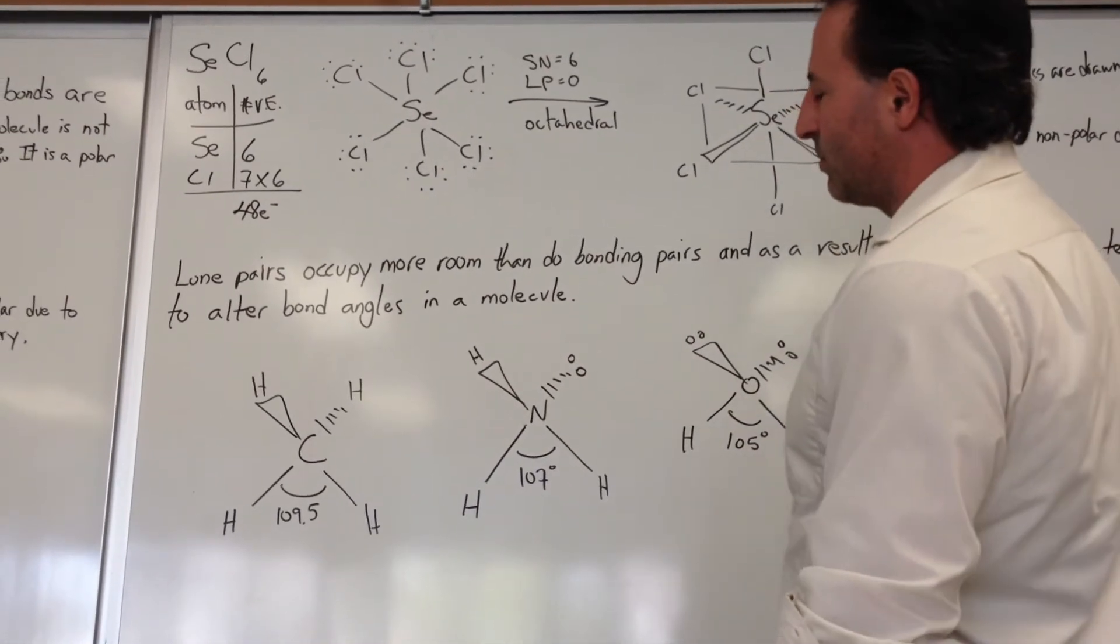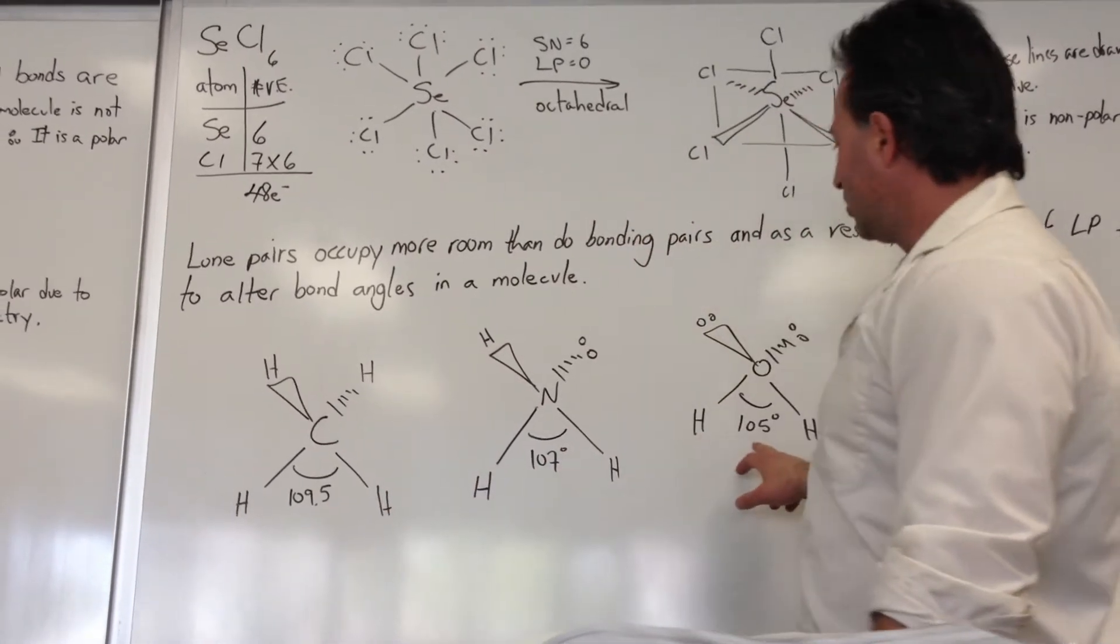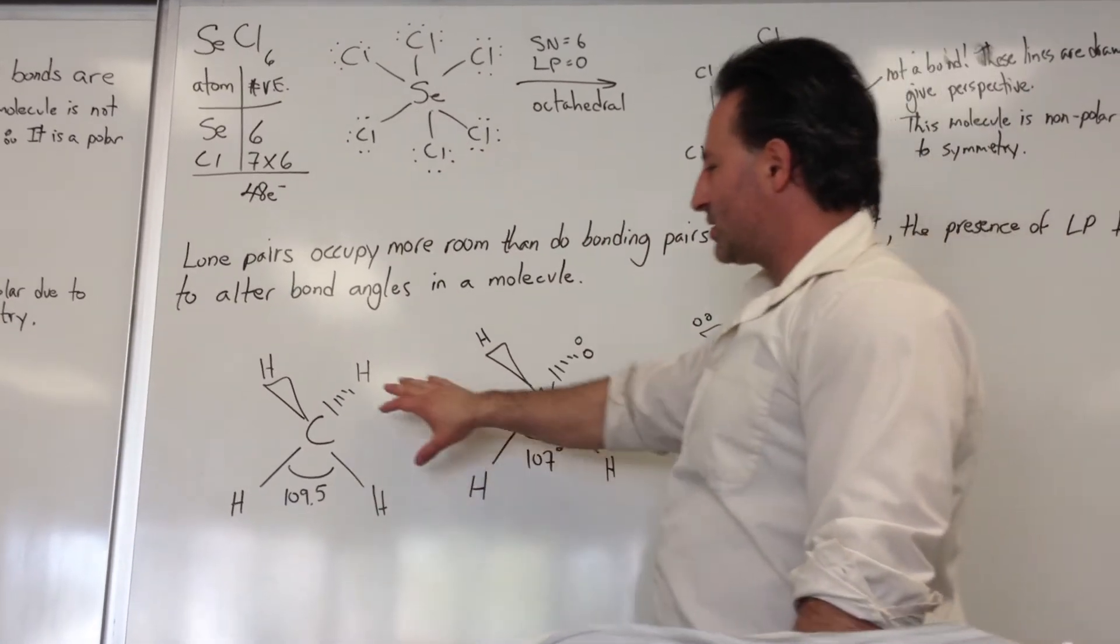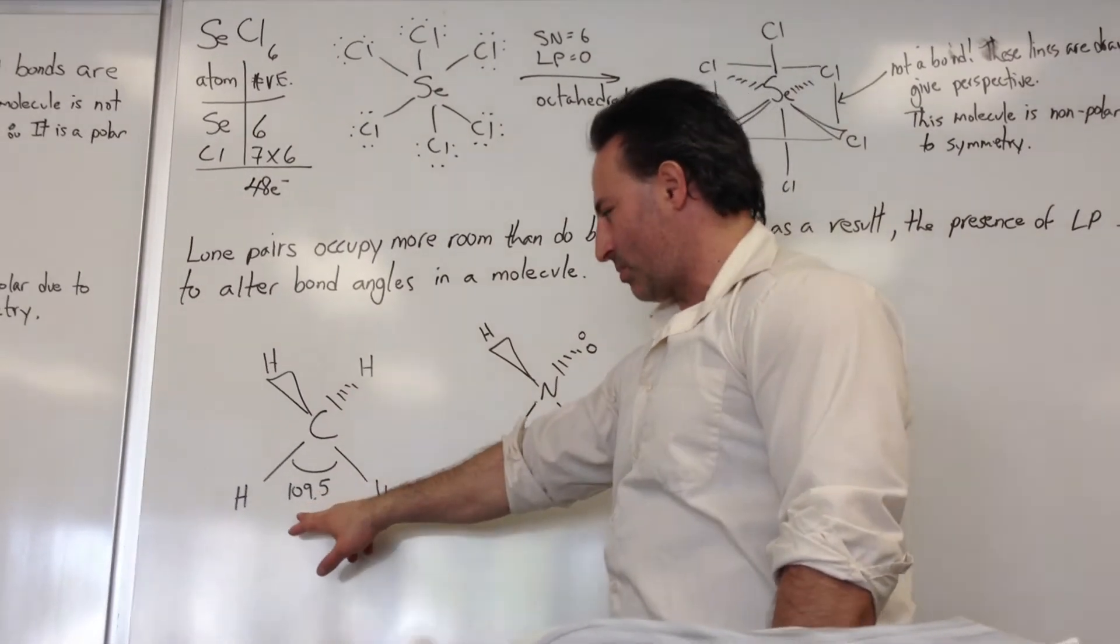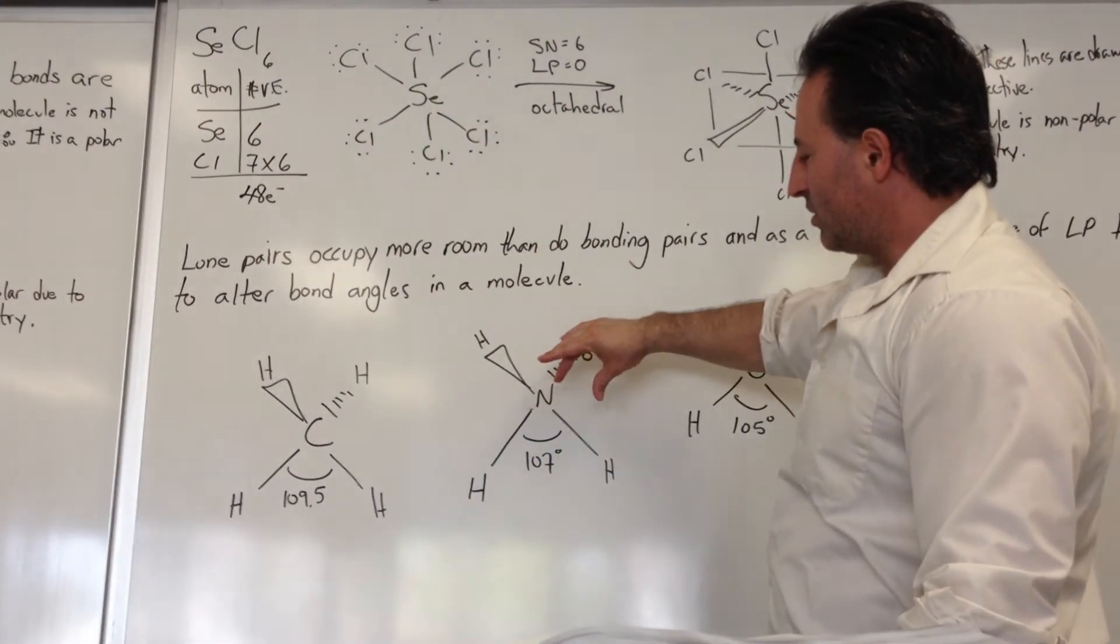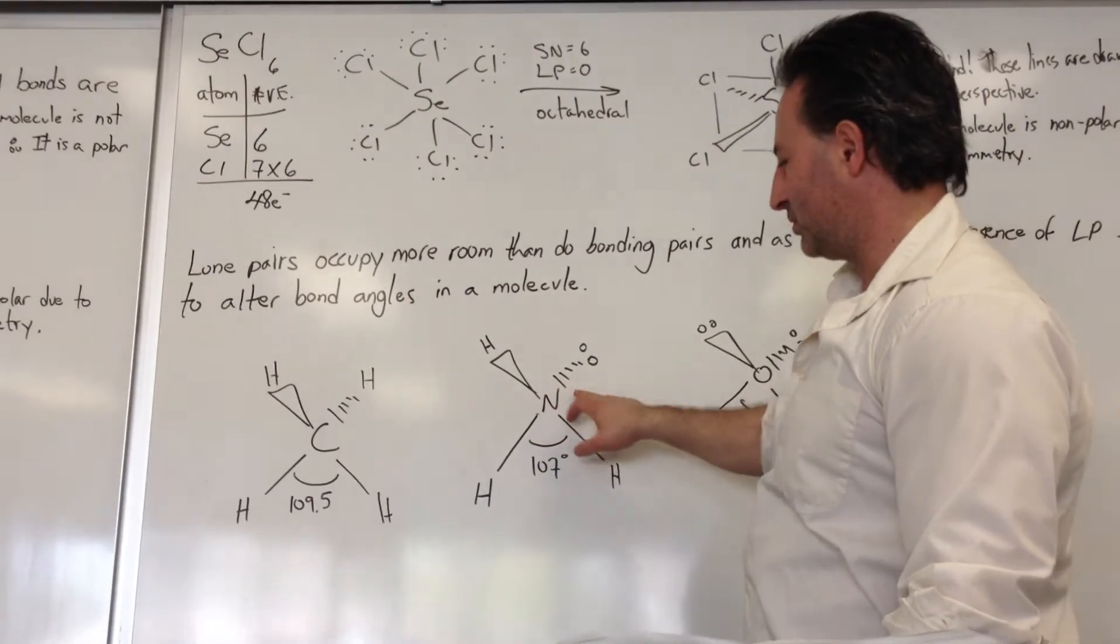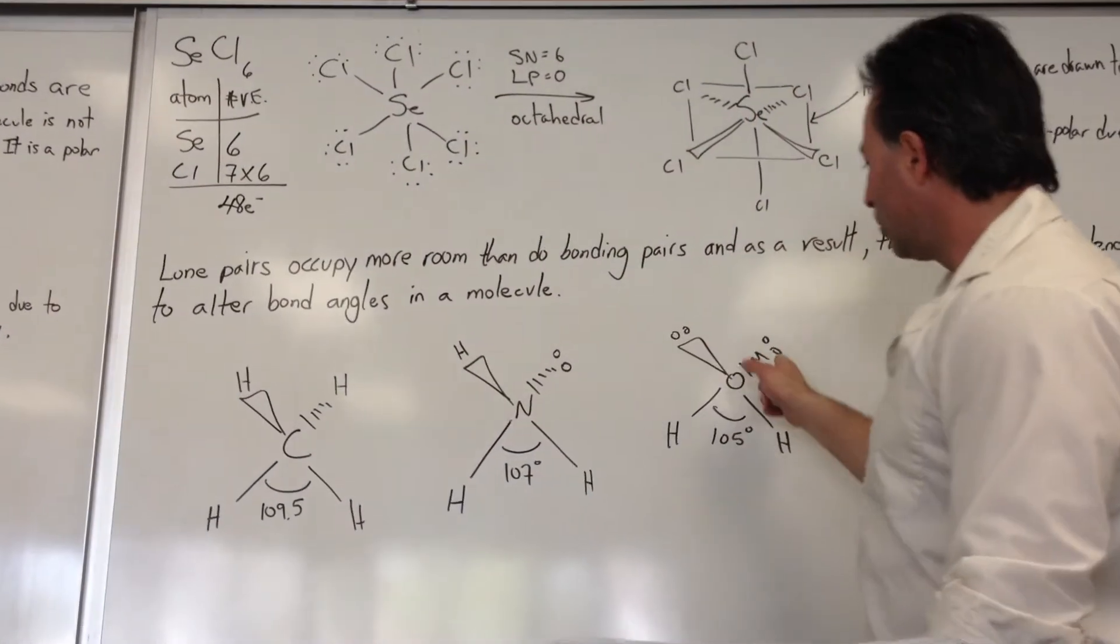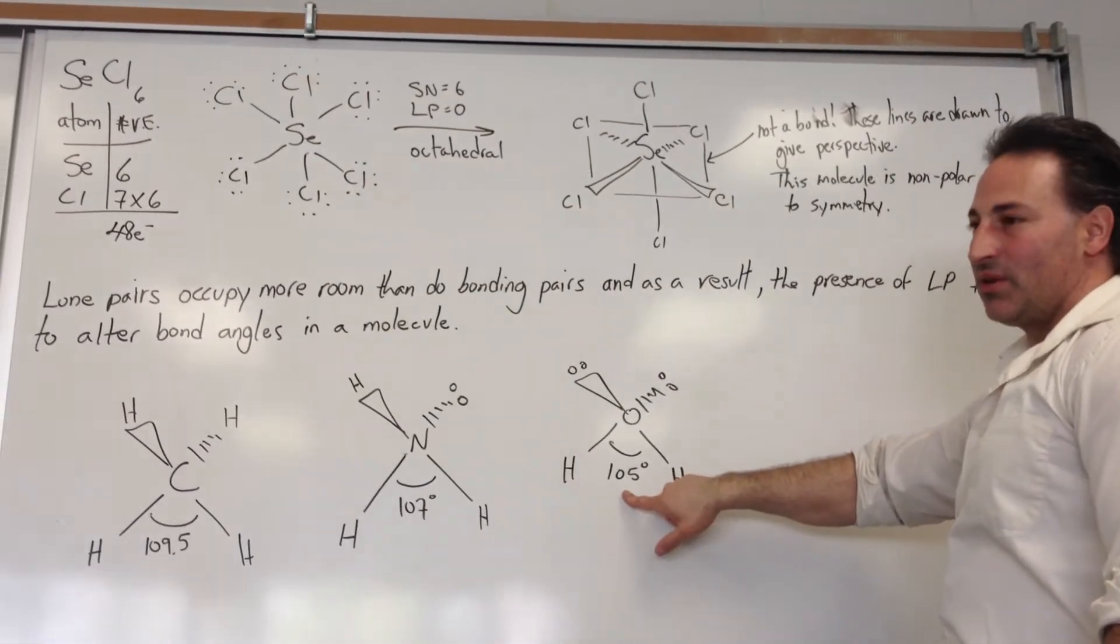And one thing I'd like to add with regards to VSEPR theory, when you see bond angles, you'll notice that if a molecule has no lone pairs in a tetrahedral arrangement, the bond angle will remain 109.5 degrees. But the addition of a lone pair pushes down the other bonding pairs, so that they go down to 107 degrees, for example, in ammonia. And if there's two lone pairs, it pushes the bonding pairs even more. You'll see the bond angle decrease down to 105 degrees.